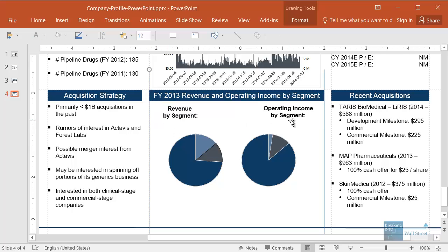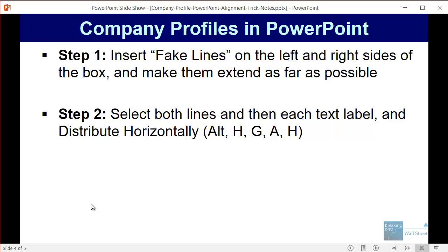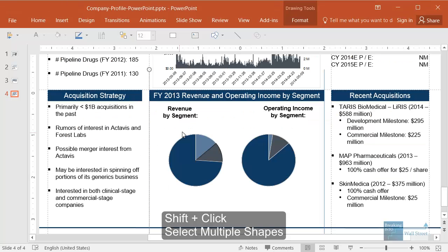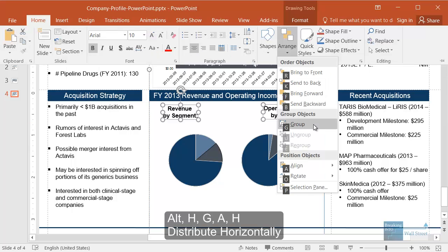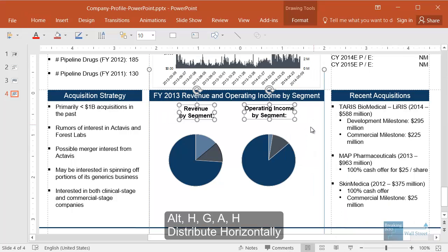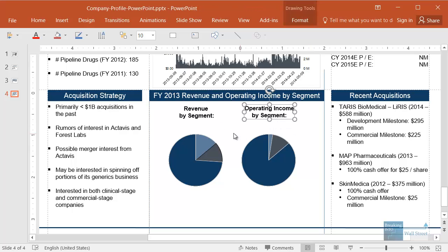If the lines did not line up to the edges, you could left or right align them, but they do in this case. Once you have these lines, the next step is to select both lines and then each text label, and then distribute the lines and the text labels horizontally. So shift-click everything and then Alt H G A H. Now the text labels are properly distributed within the box above — the same amount of space on the left side, in the middle, and on the right side. That is working correctly.